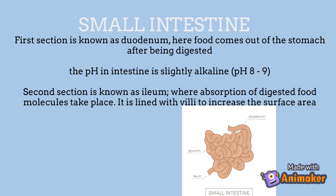The pH in the duodenum is slightly alkaline, at pH 8 or 9. The second section of the small intestine is the ileum, where absorption of the digested food molecules takes place. It is lined with villi to increase the surface area.